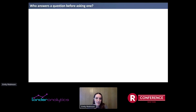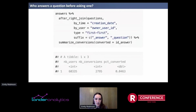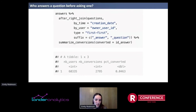What about answering a question before asking one? All of this has been assuming it goes question then answer, but there's nothing in Stack Overflow behavior that says someone couldn't answer a question before asking. To do this, we switch it up: answers become the first table and questions the second, because answers are happening before questions. We change to a right join to keep all the people asking questions. Then we summarize conversions — only people who answered a question before asking would have an ID answer entry. We find that 4.63% of people answer a question before asking it. The type argument is first, first, because we want to know if someone's first ever answer happened before their first ever question.